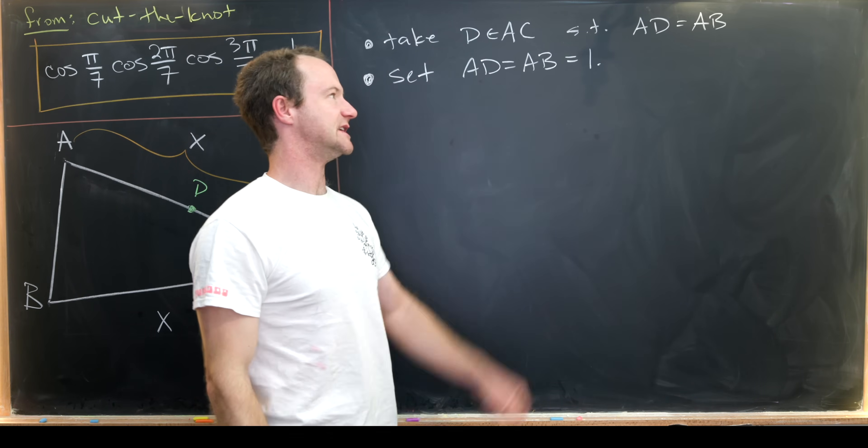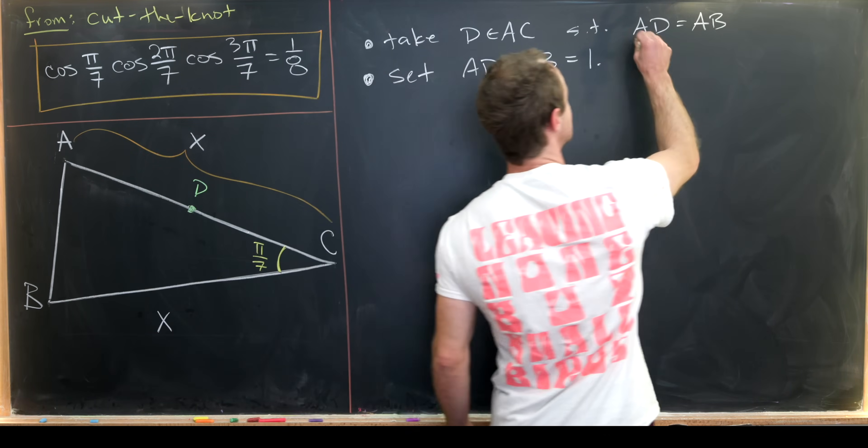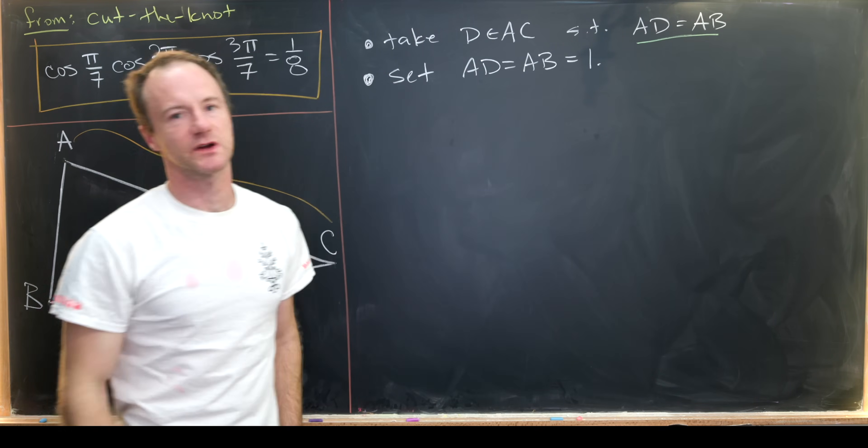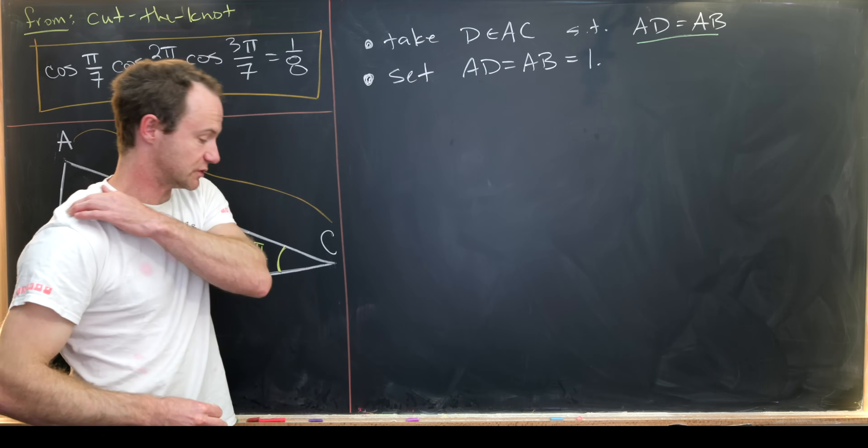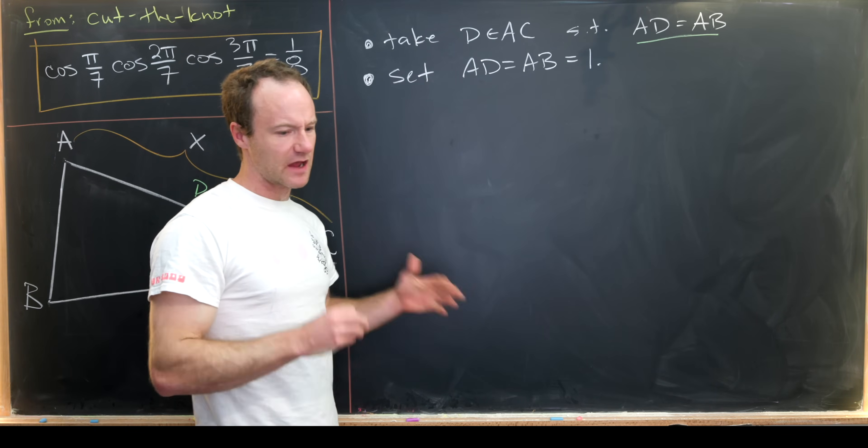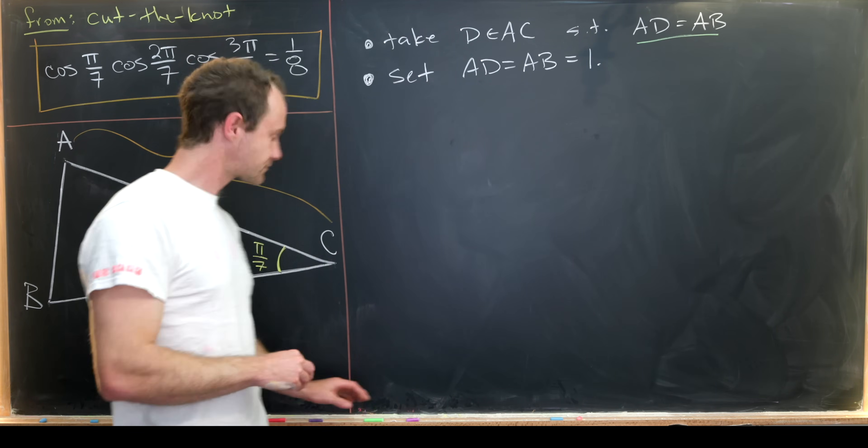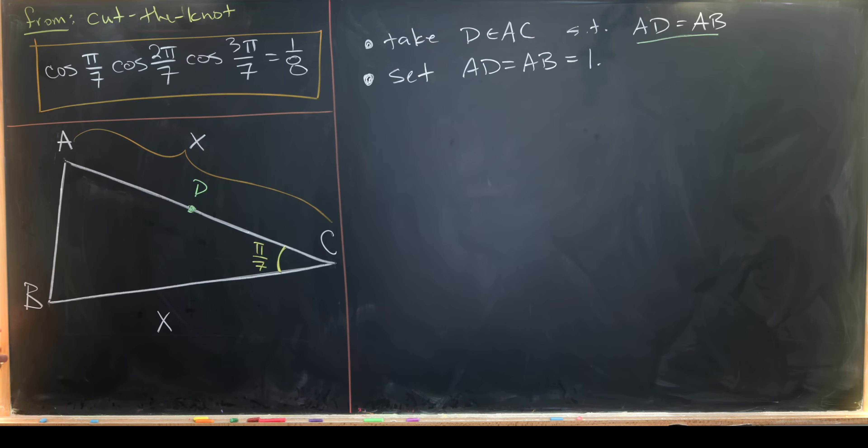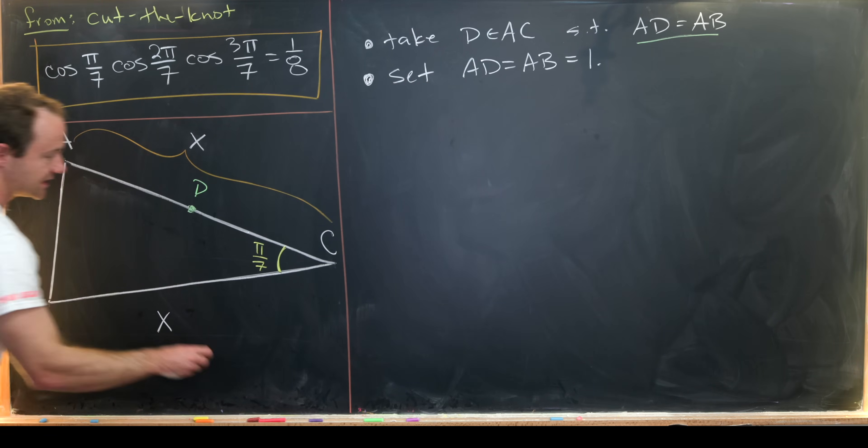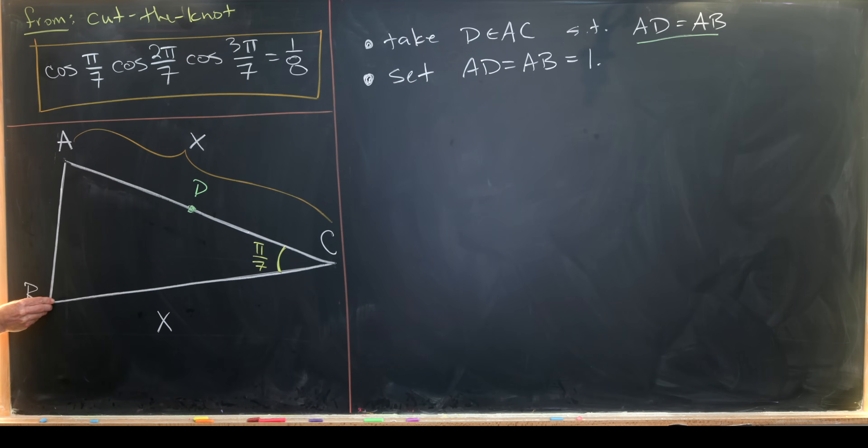I guess we're not setting AD equal to AB. That is how D was chosen right here. But we're saying that their common length is equal to 1. And we can scale the triangle as necessary to create that common length. Okay so now that we have this set up it's kind of begging for us to complete a triangle by putting a new line segment BD. So let's do that. So here's a new line segment BD.